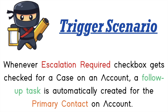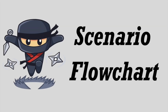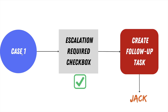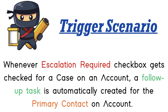Now let's understand the scenario we are going to work on today. We need to create a follow-up task on the primary contact of an account whenever the 'Escalation Required' checkbox of a case record on that particular account gets checked. I'm going to explain the requirement using a flowchart. Let's say we have an account record with a case record called Case 1 whose escalation required checkbox is not checked, and a contact called Jack whose primary contact checkbox is checked — meaning Jack is the primary contact of this account. When a user updates Case 1 by checking the escalation required checkbox, we need to create a follow-up task on Jack, the primary contact of the parent account of this case record.